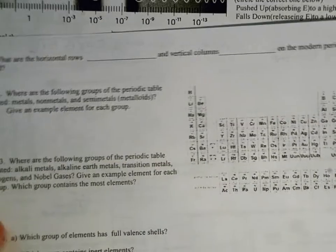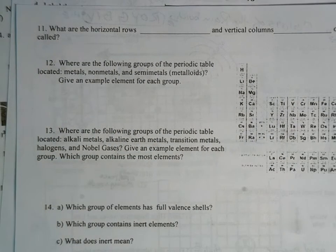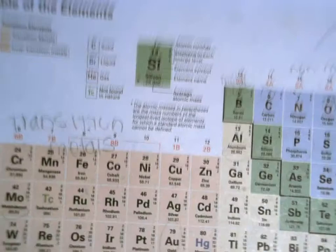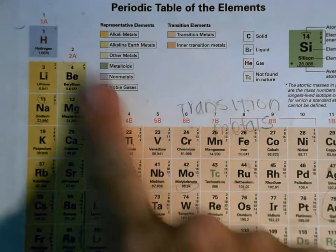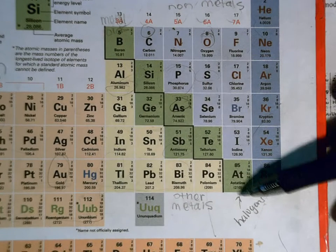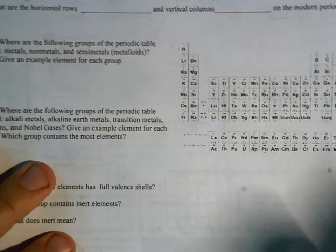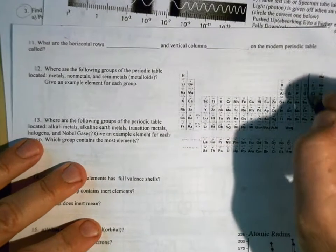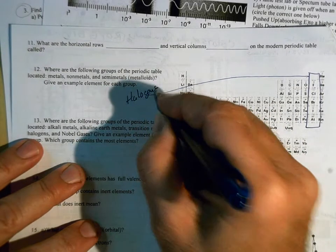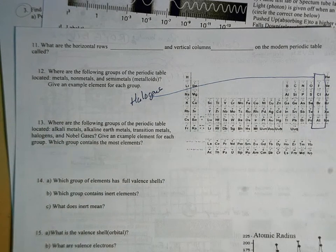Number twelve: where are the following groups of elements located on the periodic table? You've got this in your notes and in the back of your textbook — almost all groups are labeled there. The one thing I will point out is group 17, the halogens, which is not labeled in your textbook. These are the halogens. You can look in your notes for the rest.